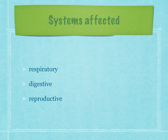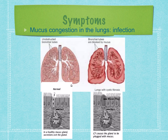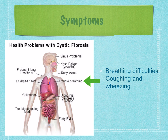Cystic fibrosis affects the lungs and the respiratory system, the pancreas in the digestive system, and the sperm ducts in the reproductive system. In the lungs, there's mucus congestion. The epithelial membranes are dry and the mucus they produce remains viscous and sticky. The mucus cannot be moved by cilia, creating a breeding ground for bacteria. Because the mucus cannot be moved out of the lungs, breathing difficulties result and there's less efficient gas exchange.